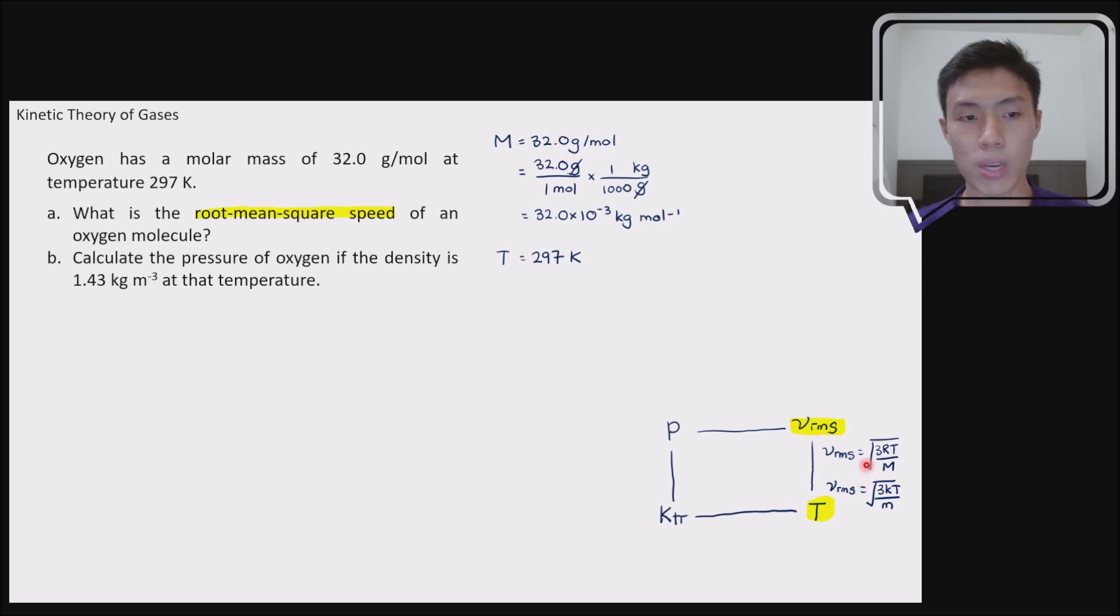For here, we are going to pick the molar mass version. So this is a molar case. We are going to take the molar equation. So for question A, we can solve it using VRMS equals to square root of 3RT over the molar mass capital M.